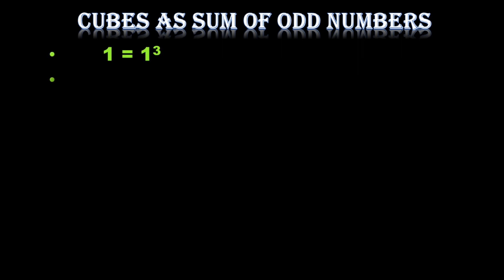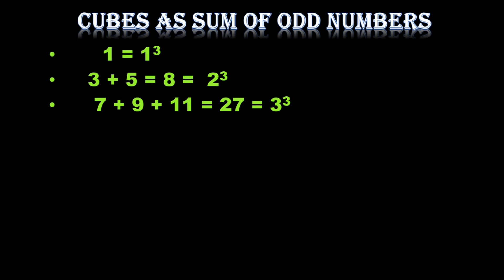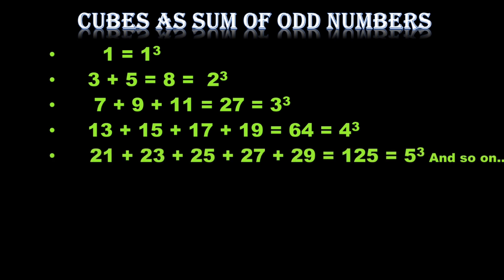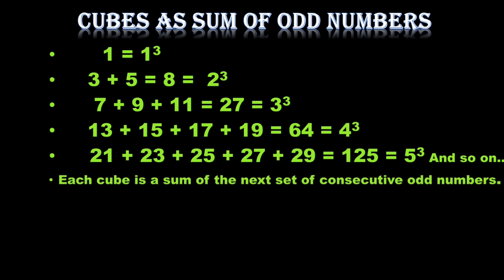Now, how are odd numbers related to cube numbers? The number 1 is 1 cube. Then 3 + 5 — these two odd numbers — sum to 2 cube. Then 7 + 9 + 11 equals 3 cube. Adding the next four odd numbers after eleven gives 4 cube, and five odd numbers give 5 cube, and so on.